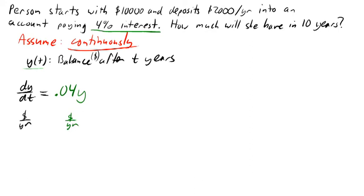Now there's something else that's causing our account to change, and that's this $2,000 per year. We're also increasing our balance by $2,000 per year. Notice that this already has units, dollars per year. We don't need to multiply this by t or anything like that. This is already the correct units for dy/dt. We need all these things to have the same units. So putting that together, there is the differential equation for this account.